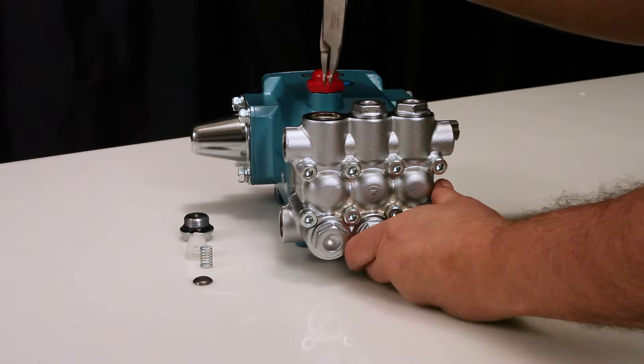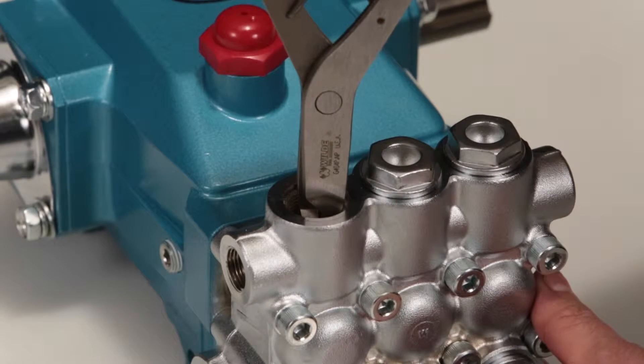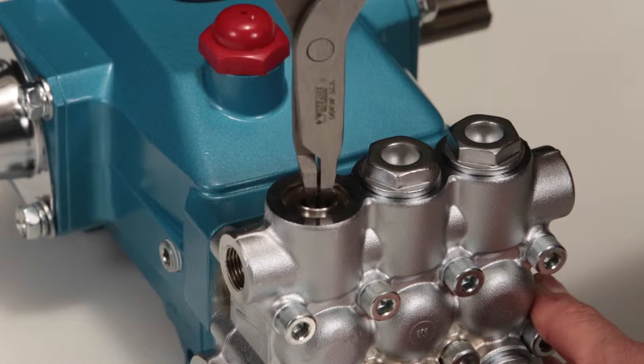To remove the valve seat, use reverse pliers. Insert the contact surface of the reverse pliers to the inside of the valve seat. Use a twisting motion while pulling away from the manifold to remove.